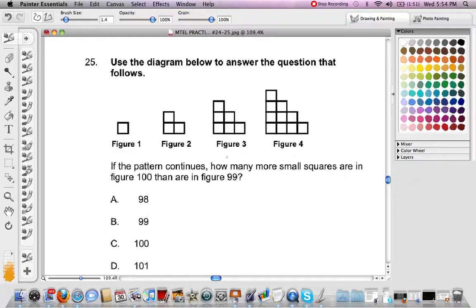If the pattern continues, how many more small squares are in figure 100 than in figure 99?